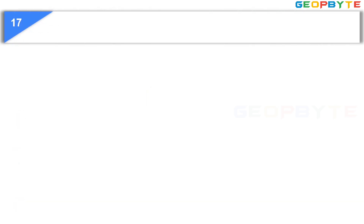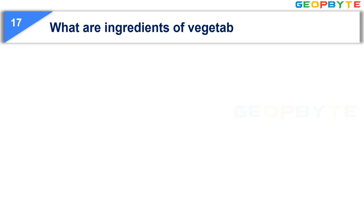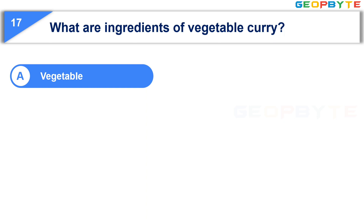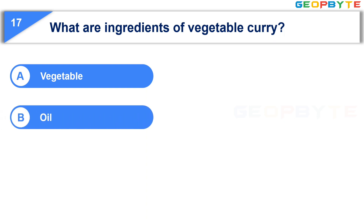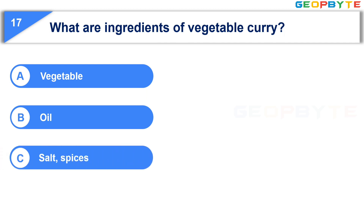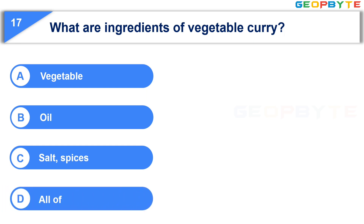Moving to the seventeenth question: What are the ingredients of vegetable curry? Option A, Vegetable. Option B, Oil. Option C, Salt and Spices. Option D, All of these. Your time starts now.